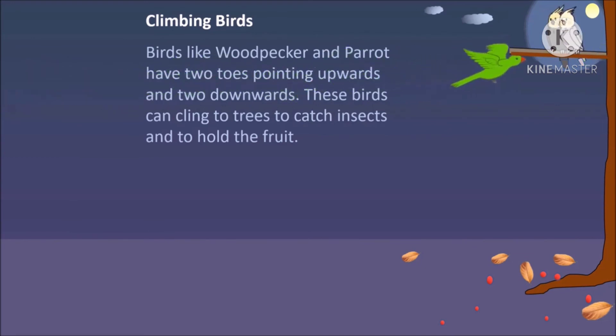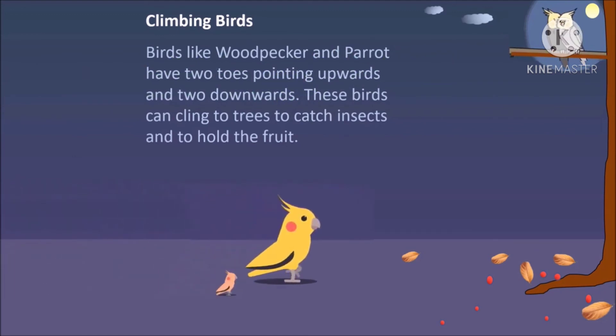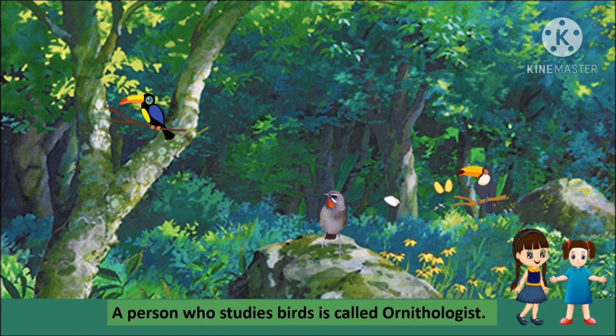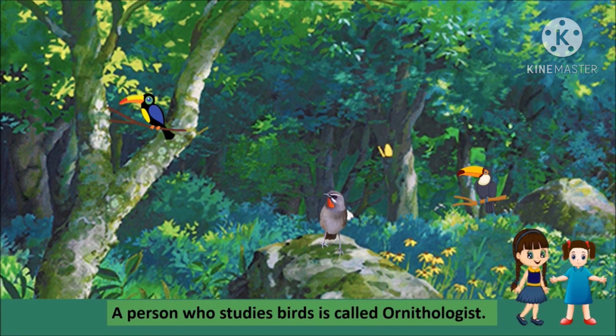Some birds like hen are scratching birds — they have strong feet with three toes in the front and one toe at the back, each with a sharp claw to scratch the ground in search of seeds and insects in the soil. Climbing birds like woodpecker and parrot have two toes pointing forward and two pointing backward to help them climb.